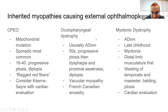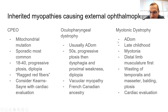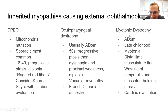OPMD is another cause of ophthalmoplegia and ptosis, associated with French Canadian ancestry. There is a mutation — PABPN1 — that comes up. Myotonic dystrophy is autosomal dominant with many systemic signs, and cardiac evaluation is also important for these patients.